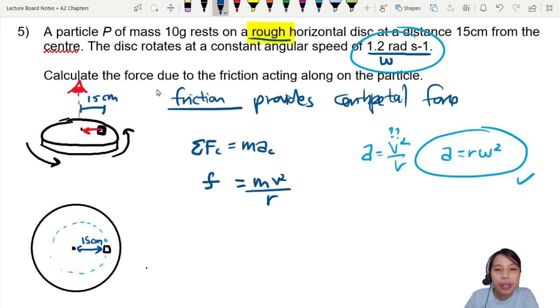Plug in equation. Mass, 10 grams, 0.010 kg. M r omega²? Why I write m v² over r? Aiya, m r omega². We don't have information, cannot use. 0.15 cm converted to meter. And lastly, omega, 1.2 radians per second.